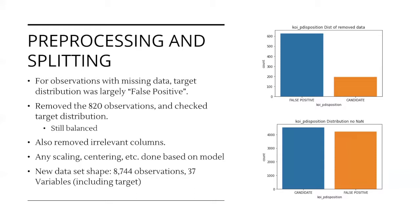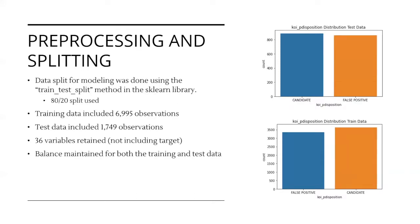We now removed these observations from the data set and checked to see if there was still relative balance in the outcomes, which was confirmed. The data was split using the train test split method from the sklearn library in Python. We chose an 80-20 split for the training and test data. The test observations will be set aside to support model testing and validation. The split was validated by checking the distribution of the target variable after the split. The bar graphs show that the test and training data sets are still well balanced and representative of the overall data.